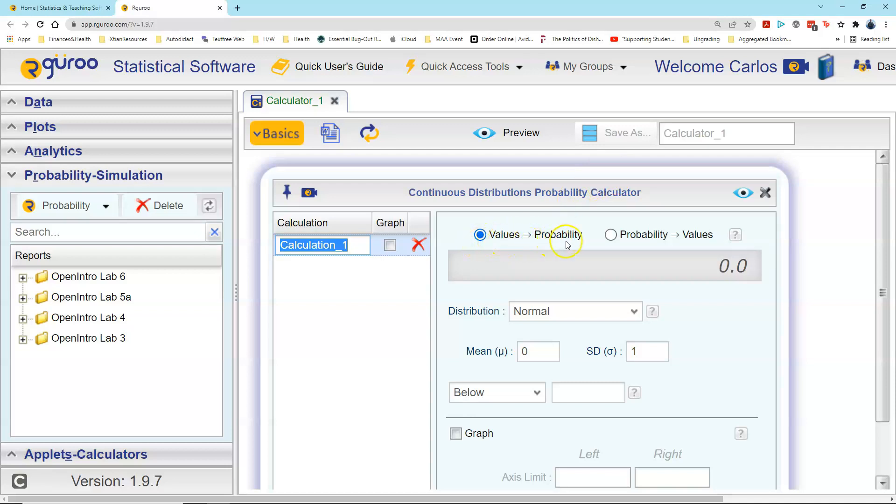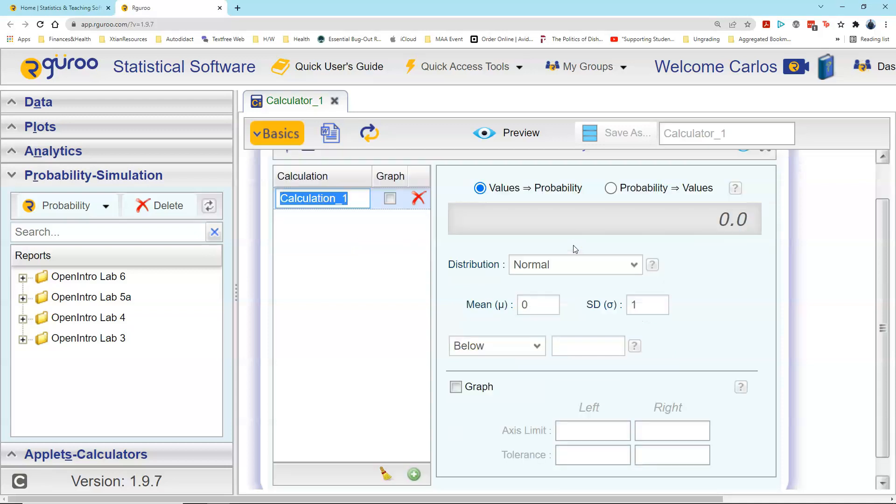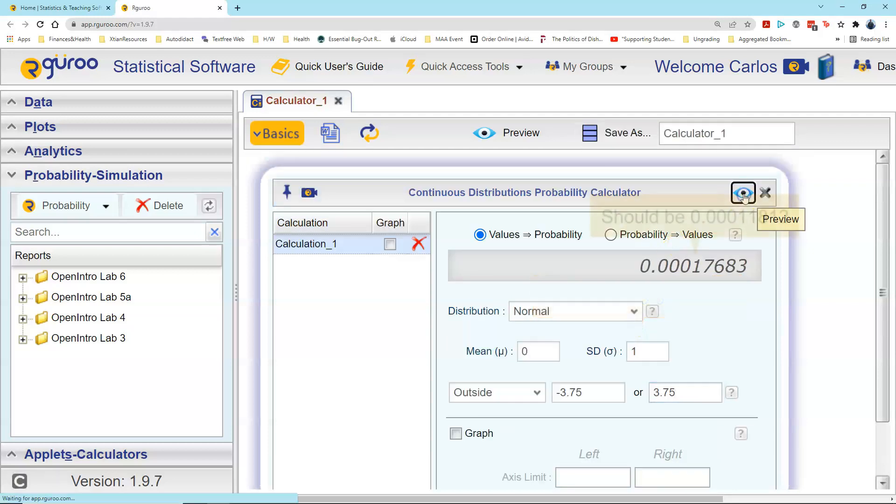Notice the radio button for values to probability is already checked because we do have Z-score values that we're going to find a probability for. The distribution is normal, mean is zero, standard deviation of one, and we are looking for the area under the curve outside of the lower value of negative 3.75 and the upper value of 3.75. We click preview. Notice that my calculator gives me the area that is in the tails outside of those two Z-score values, approximately 0.0002.